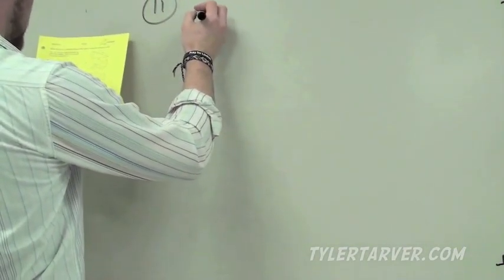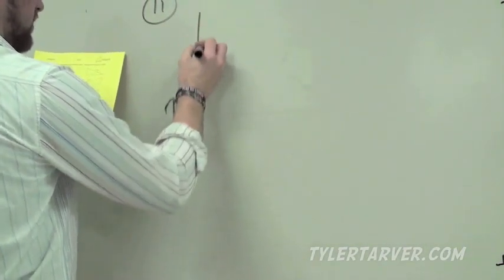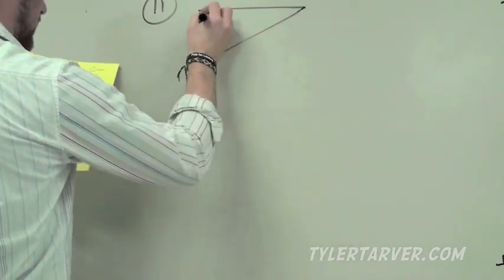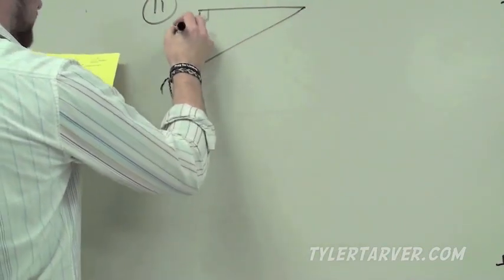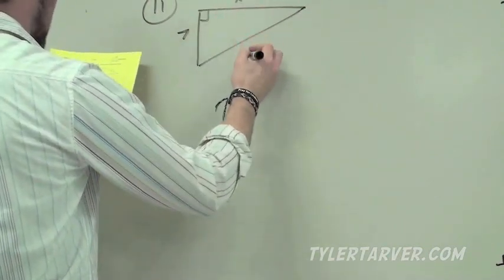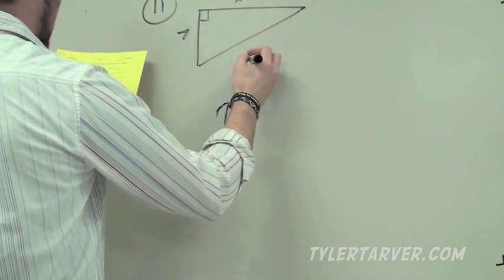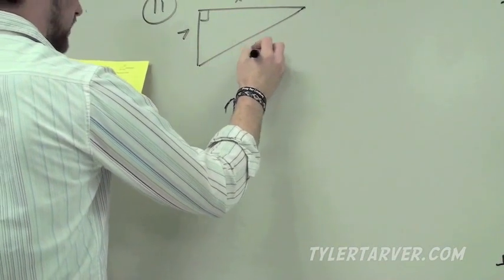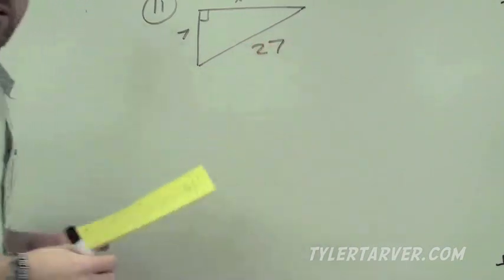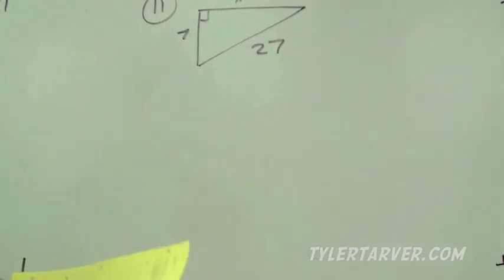On number 11, we have a right triangle. The sides are 7, X, and 27.